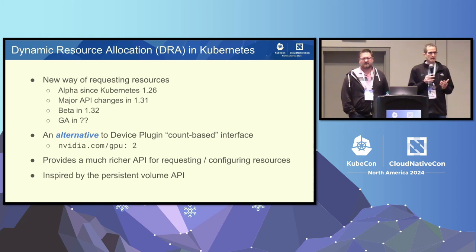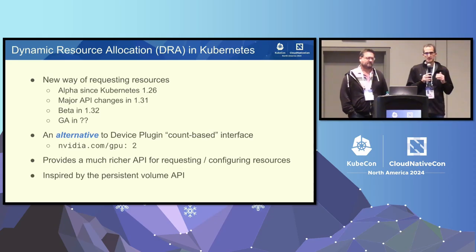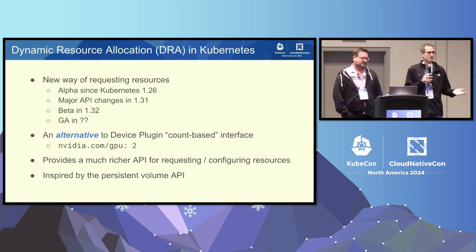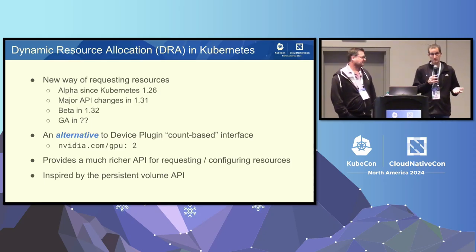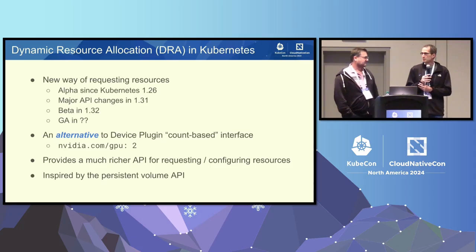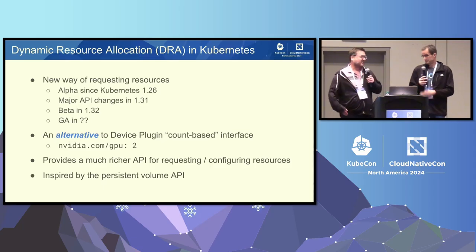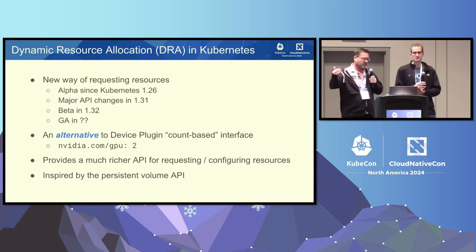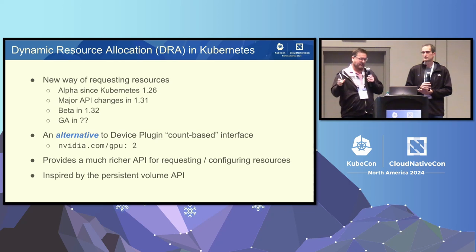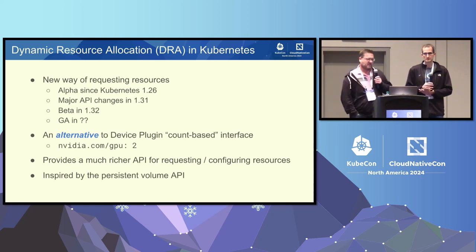It's available and we are doing bug fixes for it. I highly recommend that if you have been waiting, now is the time to get engaged and ask your vendors about a DRA driver. Ask your cloud providers whether they can enable DRA for you. Because it's off by default still — it is an API group and there are rules in Kubernetes that say those need to be off.